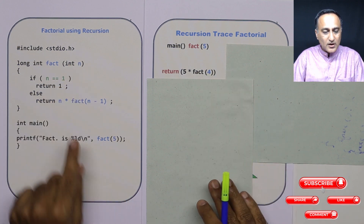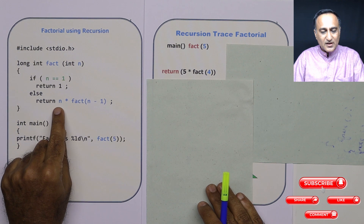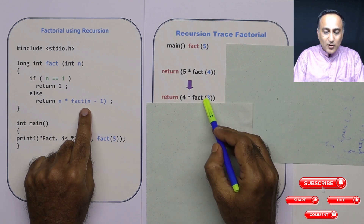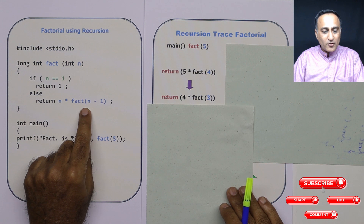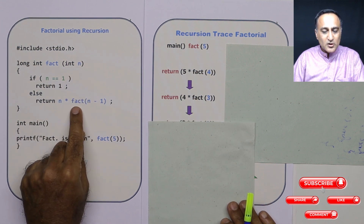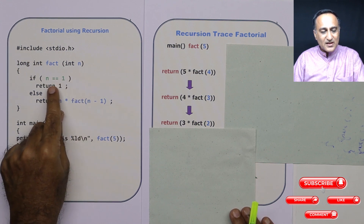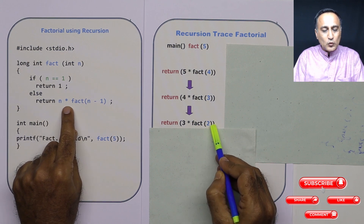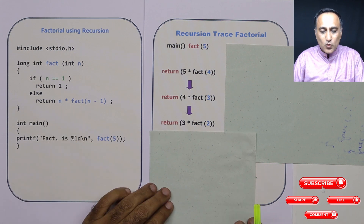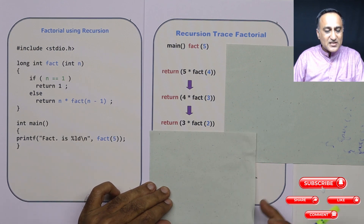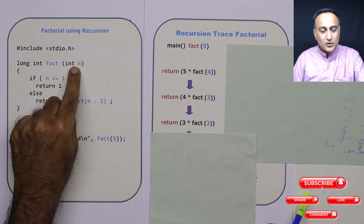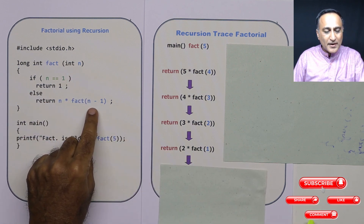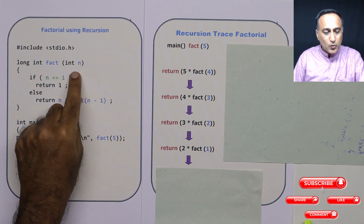So I go back. n is 4. 4 equal to 1 is false, so I come to the return: 4 into factorial of 3. I still do not know factorial of 3, so I call fact(3). n is 3, 3 is not equal to 1, so 3 factorial is 3 into factorial of 2. Still not knowing factorial of 2, I pass 2 to the function. n becomes 2, and I return 2 into factorial of 1.